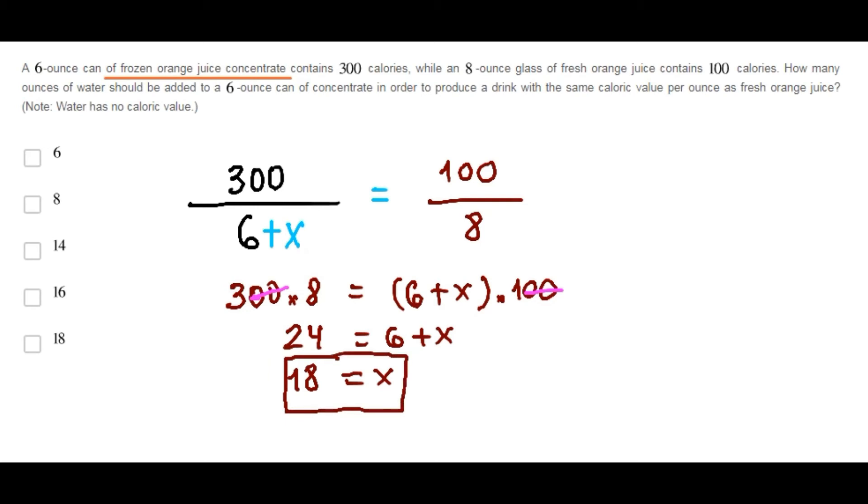So, we need to add 18 ounces of water in order to convert this proportion into this proportion. So, E is correct.